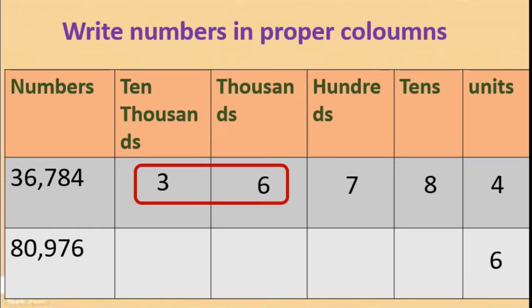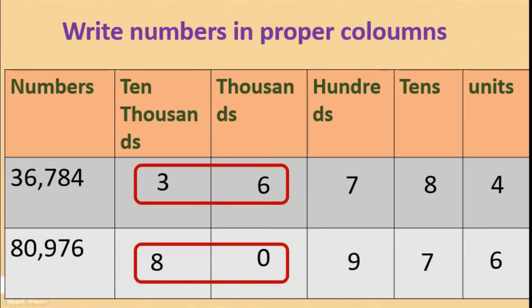One more example. Six in the units place, seven in tens, nine in hundreds, zero in thousands place, and eight in ten thousands place. Then how will we read this one? We combine them. Here zero is there in the thousands place, so it is directly eighty-thousand-nine-hundred-seventy-six, because both are thousands columns.